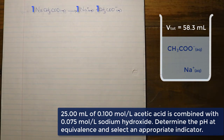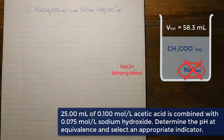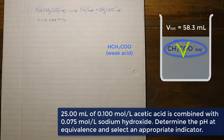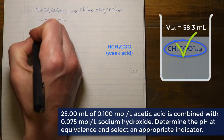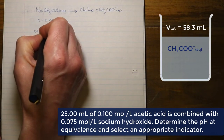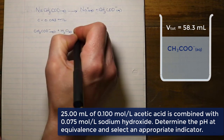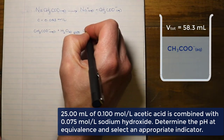Sodium acetate dissociates readily into sodium ions and acetate ions in a 1:1 ratio. The sodium ion is the conjugate of a strong base — sodium hydroxide — so it is not going to impact the pH. However, the acetate ion is the conjugate of a weak acid, namely acetic acid, so the acetate ion could potentially act as a weak base. Since the sodium acetate concentration is 0.043 mol/L, by the 1:1 ratio that is also the concentration of the acetate ion.